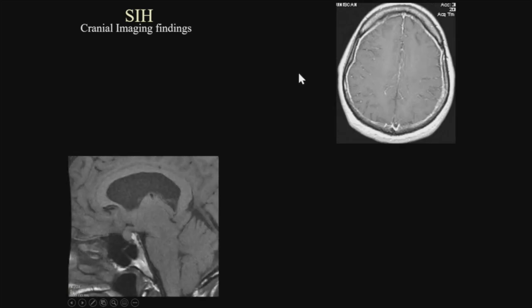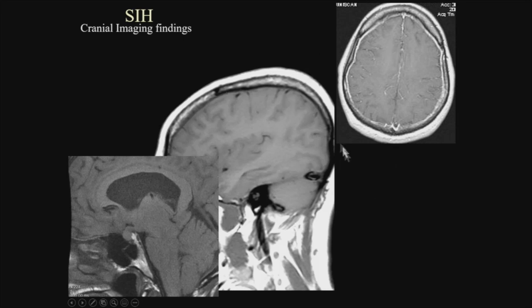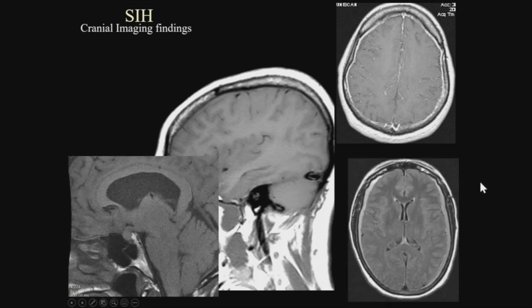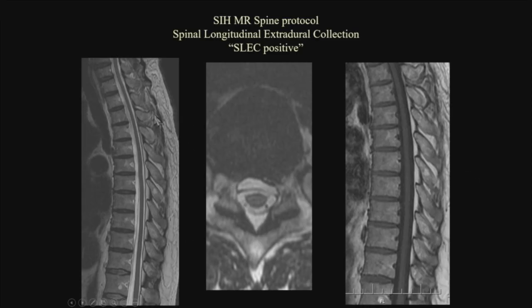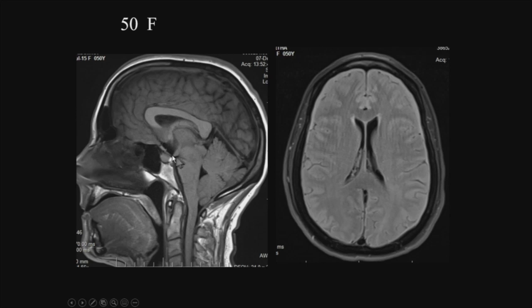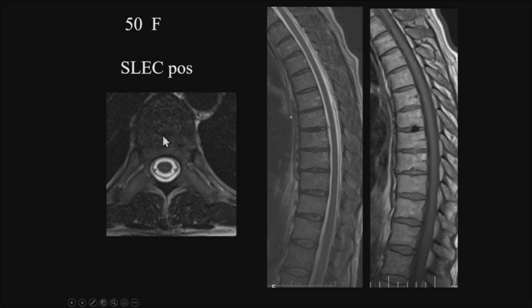The cranial findings were first described by Fishman and Bill Dillon back in 1993. I particularly like the venous distention sign and the pituitary enlargement — those are really helpful. In the spine, we're looking for the spinal longitudinal extradural collection, or SLEC: a black line visible in the epidural space with CSF on both sides of it, seen on both sagittal and axial views. If a patient is SLEC positive, we now know the leak will probably be found in the ventral aspect of the canal.